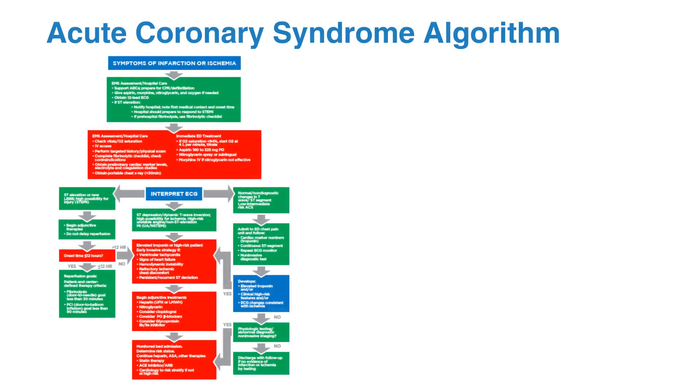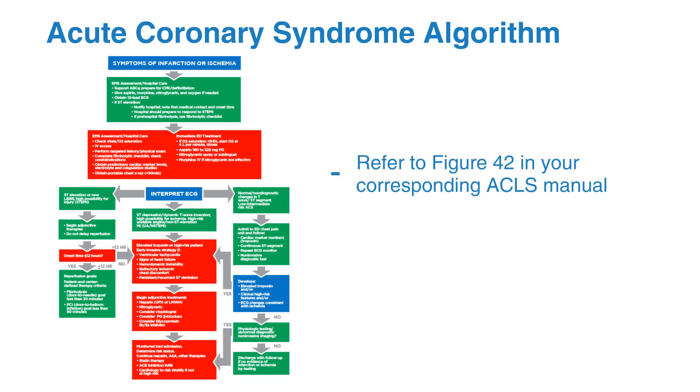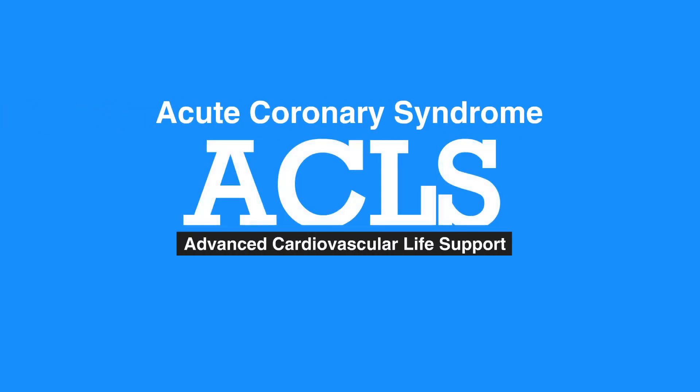For the acute coronary syndrome algorithm, refer to figure 42 in your corresponding ACLS manual. This concludes our lesson on acute coronary syndrome. Next, we'll review acute stroke.